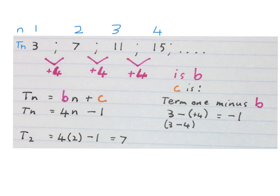You don't have to do that, but I just checked: term 2 is 4 times 2, which is 8, minus 1 is 7. Yes, the formula is working. Please stop the video and get your brain around this one.